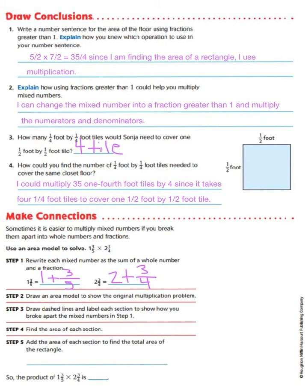Step one is to rewrite each mixed number as the sum of a whole number and a fraction. So, to do that, we would take 1 3/5 and that would be equal to one whole number plus 3/5, the fraction. We could also take 2 and 3/4, and that would be the same as 2 as the whole number plus 3/4, the fraction.